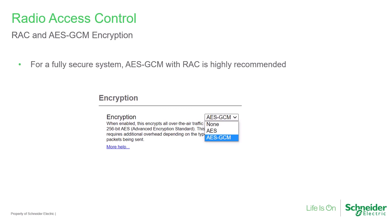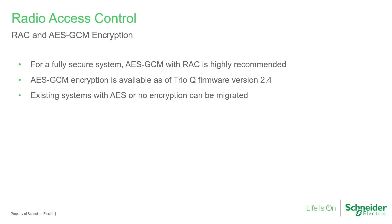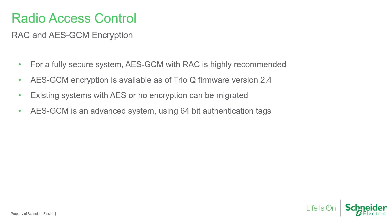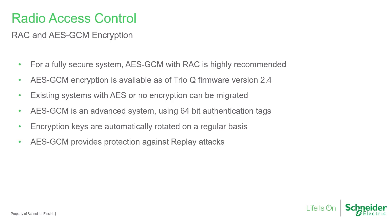For a fully secure system, the use of AES-GCM encryption along with RAC is highly recommended. AES-GCM is available as of TRIO-Q firmware version 2.4. Systems with AES encryption or no encryption can be migrated to AES-GCM. AES-GCM is an advanced encryption system using 64-bit authentication tags. Encryption keys are automatically rotated on a regular basis, with key management based upon radio access control. The use of AES-GCM also provides protection against replay attacks.